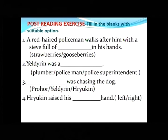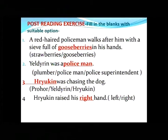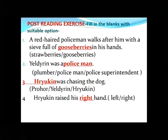A red-haired policeman walks after him with a sieve full of blank in his hands. Yeldrin was a blank. Blank was chasing the dog. Ryokin raised his blank hand. And I'm sure you have answered all these correctly. Let's check the answers: the first answer is gooseberries, then policeman, then Ryokin, and right.